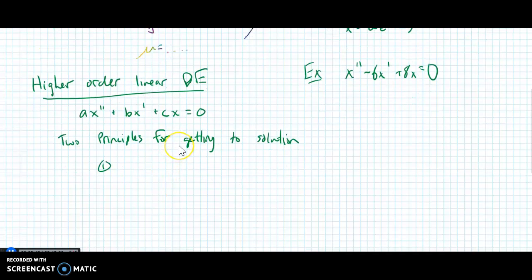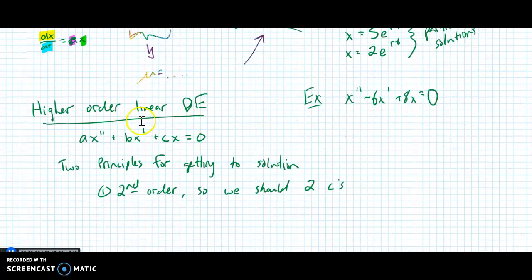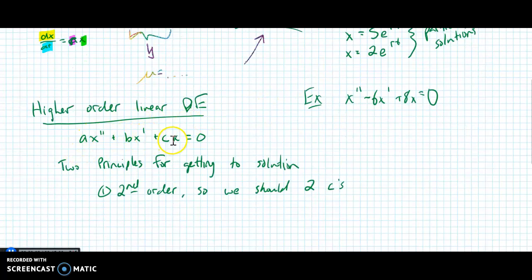So we are going to work on solving this, getting a good solution method. And it's actually, once you figure it out, it's super simple. But there are going to be a couple guiding principles to getting the solution. The example that I'm going to do a little bit later is x double prime minus 6x prime plus 8x equals 0. I should also add that these things are wildly applicable all over the place, these second order linear differential equations. We'll get into that application and context-based problem later on. We're going to learn how to solve them first.